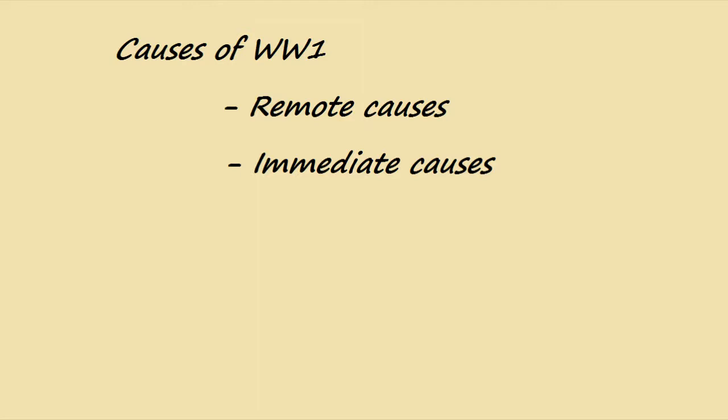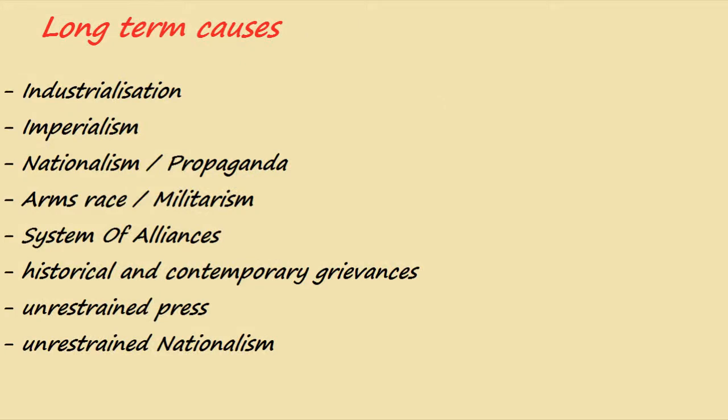Now we shall give the titles of the long-term causes, then the short-term causes, and explain them one by one. The first long-term cause is industrialization and imperialism — they are interrelated. Then we have nationalism and propaganda. Then we are going to talk about arms race and militarism in general, and the system of alliances, which is a very important point.